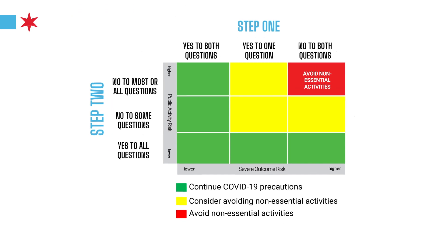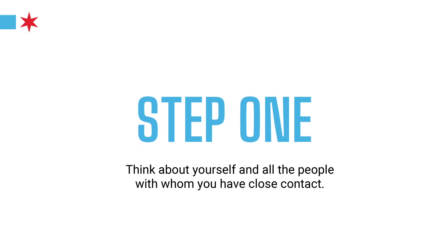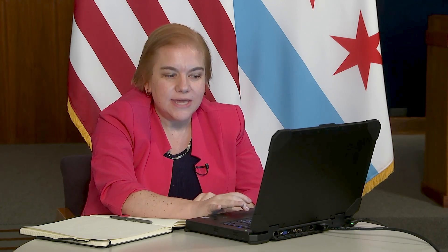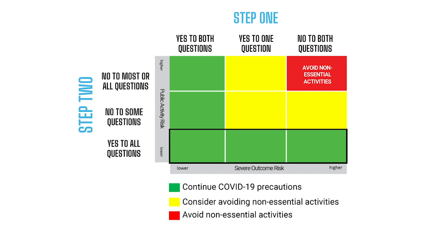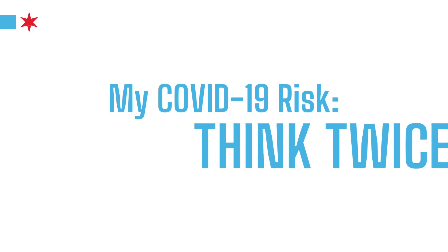So you can use this matrix every time you're thinking about a public activity. Do your step one — what is my risk and the risk for people in my close circle? And number two, answer these questions about the activity. As we continue to move forward, the risk is going to hopefully continue to drop, but you're going to keep making these same decisions day in and day out with each new activity. So please keep using this matrix as you make decisions in your life. Think twice, and together we can be safe, Chicago.